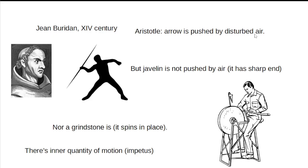Aristotle claimed that the cause of motion of a moving body is disturbed air. Bourdin refutes this opinion by everyday observation. A spinning grindstone is not being pushed by air, nor is a javelin with two pointed ends. Thus,